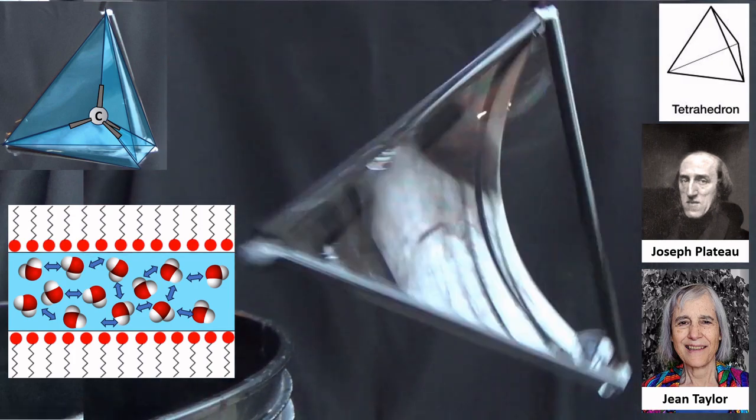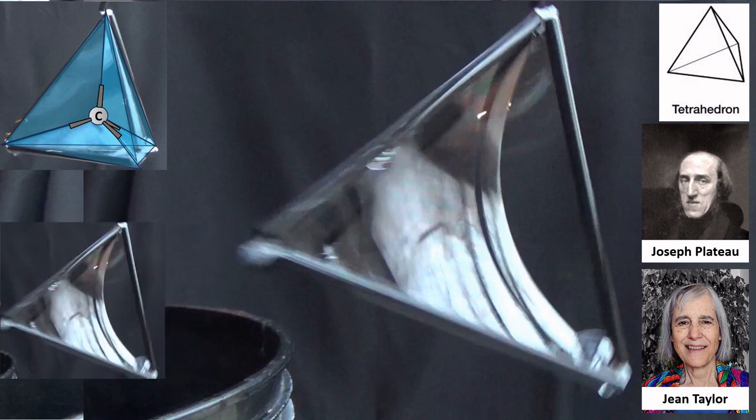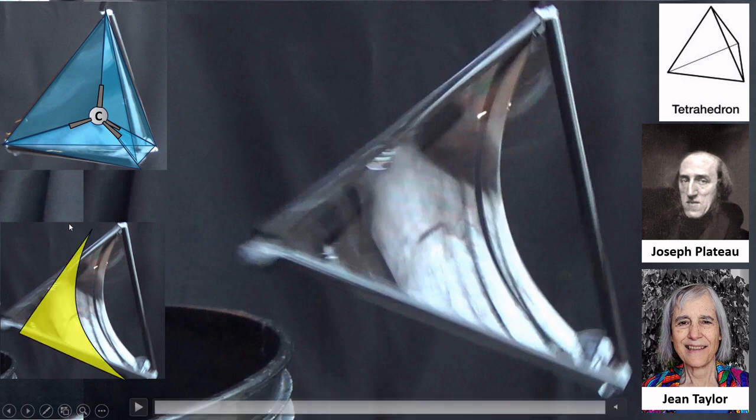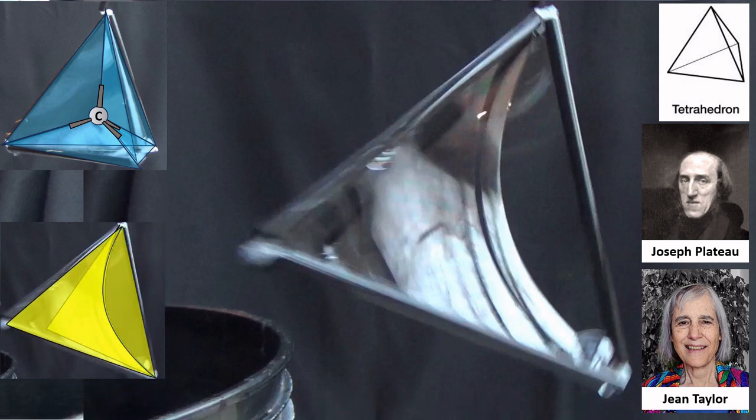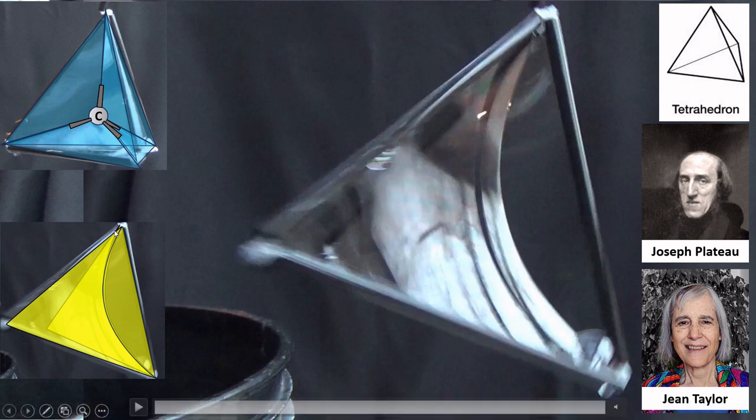The cool thing is, if you pop one of those six films, it gives you a new arrangement there, and that arrangement is just made up of three films. They rearrange themselves. There's one, two, three. The first two are kind of saddle-shaped, hyperbolic of sorts, and that last one, the piece of the circle, is flat. And again, those three films are meeting at 120 degrees all along this boundary.